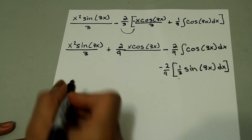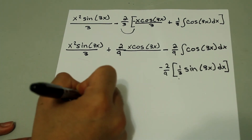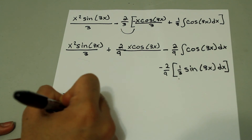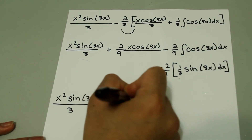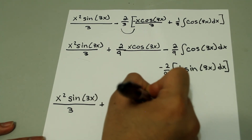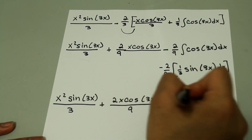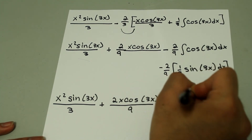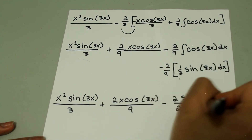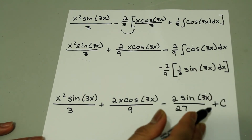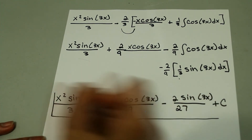So we have x squared times sine of 3x divided by 3, plus 2x cosine of 3x divided by 9, minus 2 sine of 3x over 27, plus c. Don't forget the plus c since the original problem was an indefinite integral. And that is the final answer.